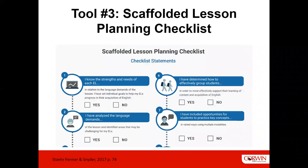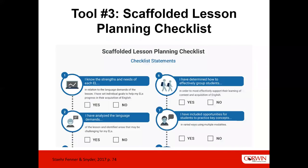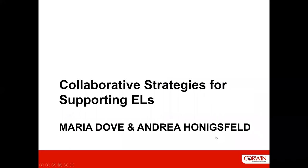The final tool is a scaffolded lesson planning checklist that Sidney and I developed, also from our Unlocking English Learners' Potential book, page 74. We have ten points you can use together with content teachers when co-planning lessons, just to see if you have the elements of effective lesson planning that will benefit English learners. We encourage you to take a look and use these tools. Now I'll turn it over to Maria and Andrea.